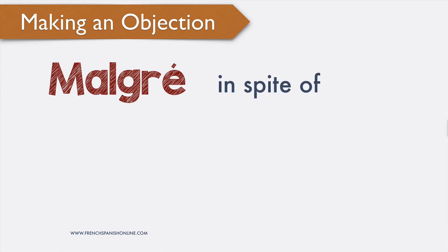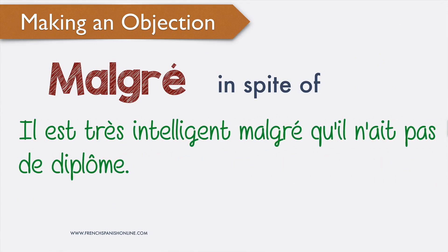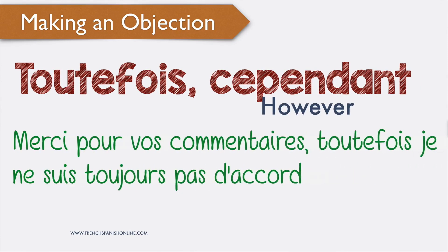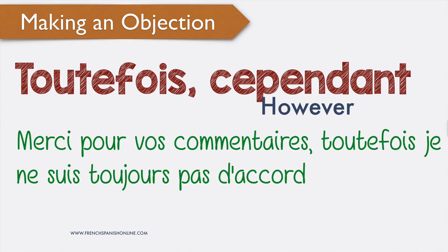'Malgré' means 'in spite of' or 'despite': 'il est très intelligent malgré qu'il n'ait pas de diplôme'. 'Toutefois' and 'cependant' are two other similar connectors meaning 'however': 'merci pour vos commentaires, toutefois je ne suis toujours pas d'accord', or 'cependant je ne suis toujours pas d'accord'.